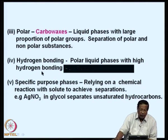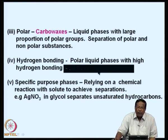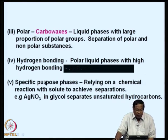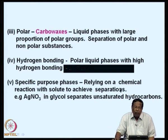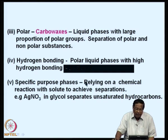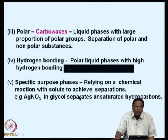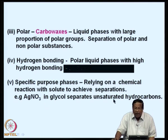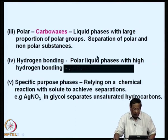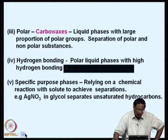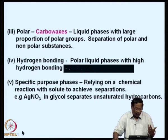For substances capable of forming hydrogen bonds, polar liquid phases with higher hydrogen bonding, such as glycol, should be used. For specific purposes, phases that rely on chemical reactions with the solute are also available. For example, silver nitrate in glycol can be used to separate unsaturated hydrocarbons from a mixture — passing a hydrocarbon mixture through a column containing silver nitrate in glycol retains the unsaturated hydrocarbons.